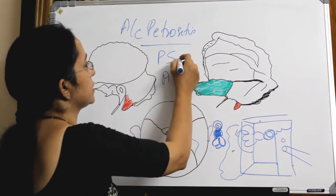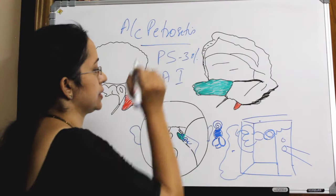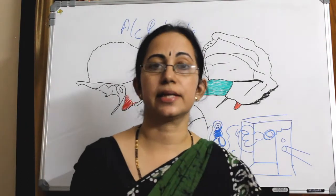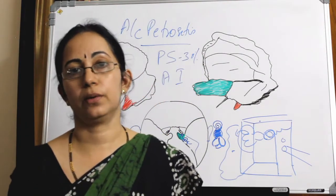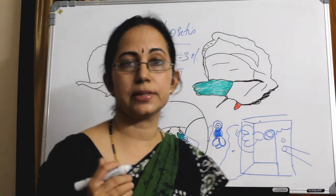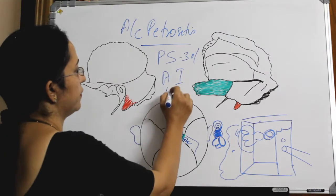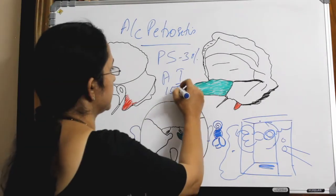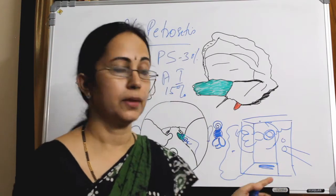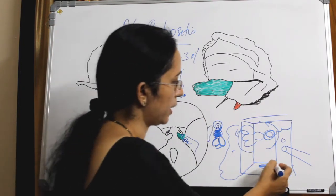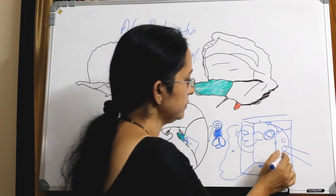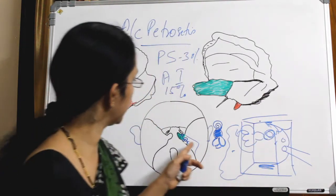That is more common because in 30% of cases these posterosuperior air cell tracts are pneumatized. The anteroinferior group is less common at 15%, and that goes from the hypotympanum around the Eustachian tube and around the cochlea to the petrous apex.